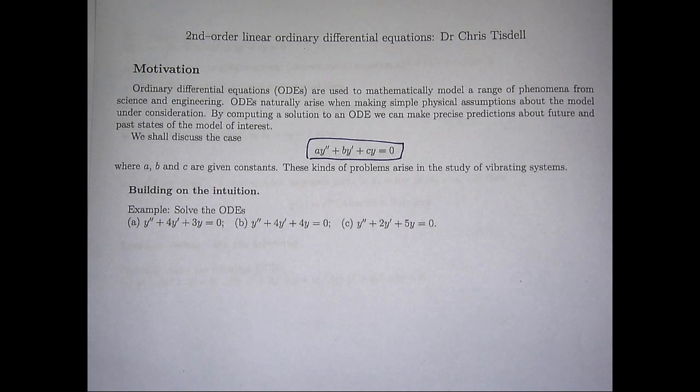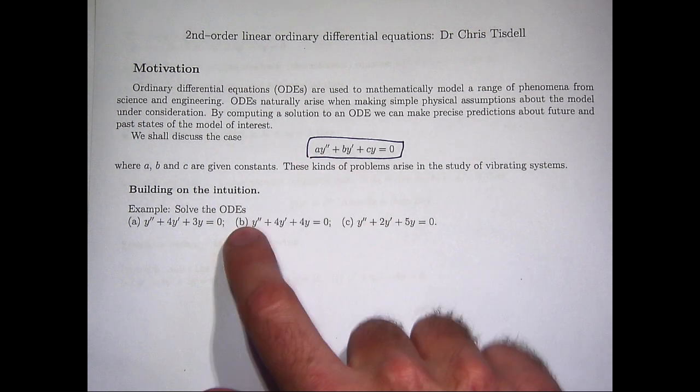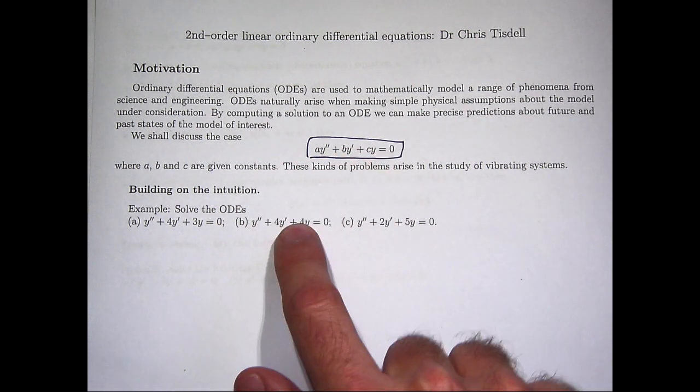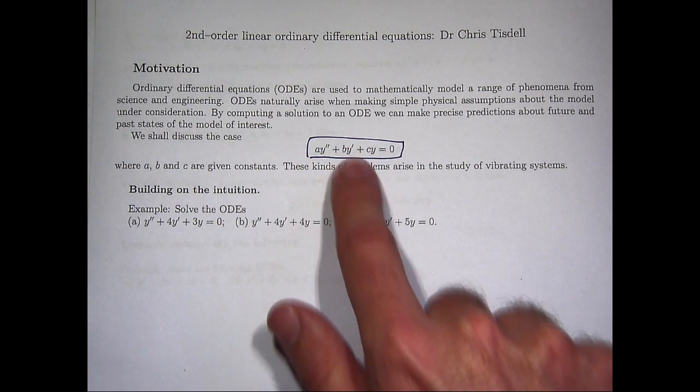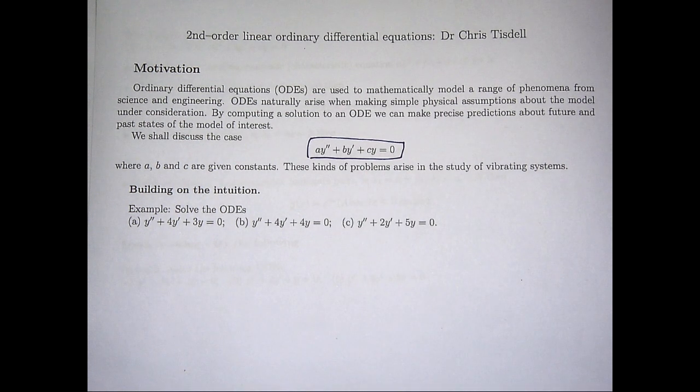In the second case, we would have a equals 1, b equals positive 4, and c equals positive 4. And you know, again you can find the coefficients there from the third case. Okay, now the analysis for these, for the solutions, involves a special polynomial, a quadratic equation, in fact.